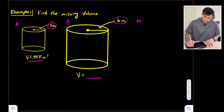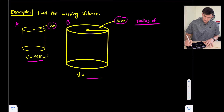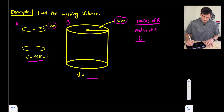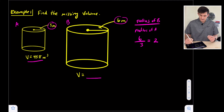Let's take the radius of B divided by the radius of A. The radius of B is 6, the radius of A is 3, and we get 2. So our scale factor K is equal to 2.